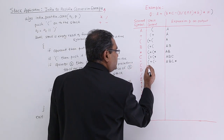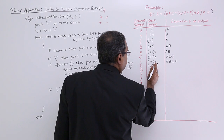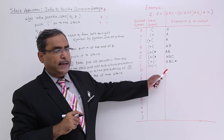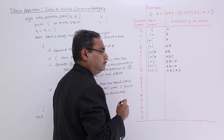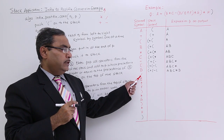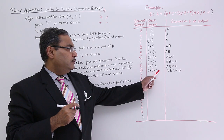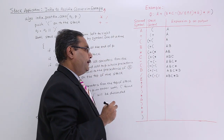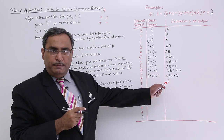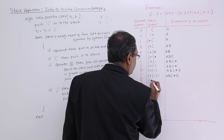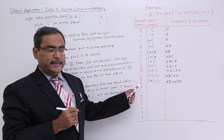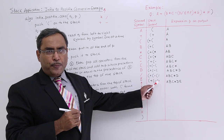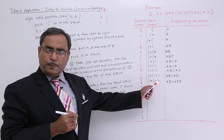An opening bracket is encountered and pushed onto the top of the stack. D is an operand and is kept in P. The slash operator is obtained — no operator is found at the top of the stack, so it is pushed and nothing is popped. E is an operand and is kept in P. The exponentiation operator is found, whose precedence is greater than slash, so no operator is popped and exponentiation is pushed onto the top of the stack. F is an operand and is kept in P.